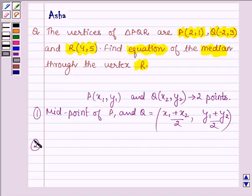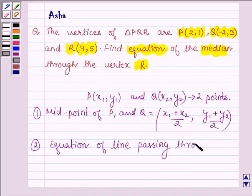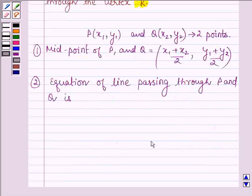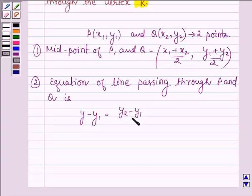And second is the equation of line which passes through P and Q, given by (y - y₁) = ((y₂ - y₁)/(x₂ - x₁))(x - x₁).